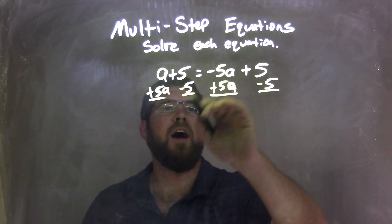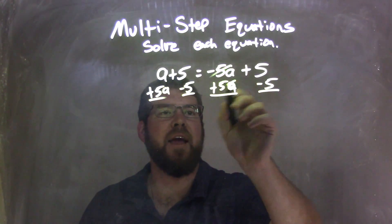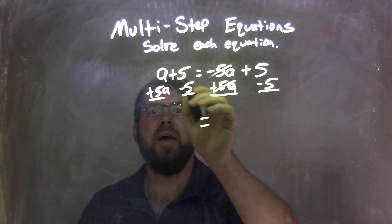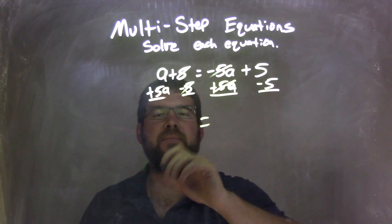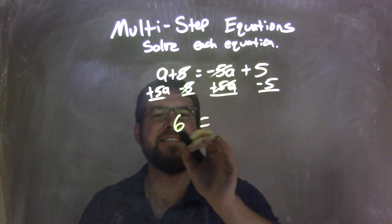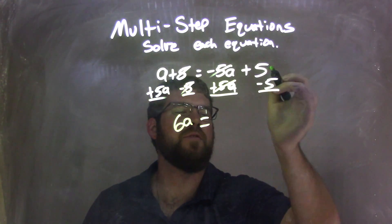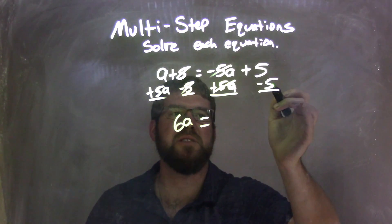The negative 5A and 5A, they cancel, and then this 5 and negative 5 will cancel. A plus 5A is 6A, and then here, well, that canceled. 5 minus 5 is actually 0, right?